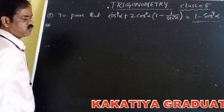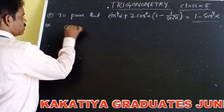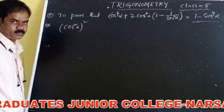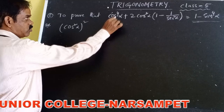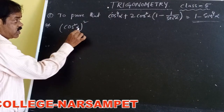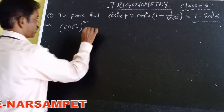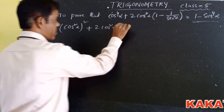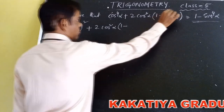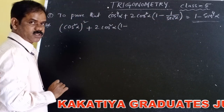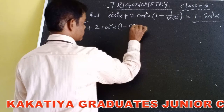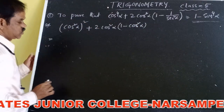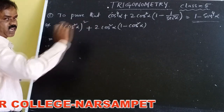Writing cos⁴α as (cos²α)². Then plus 2·cos²α(1 - 1/sec²α). According to the reciprocal property, 1/sec²α becomes cos²α. So, plus 2·cos²α(1 - cos²α). Now we have to shift the cos terms into sine terms because the RHS is 1 - sin⁴α.